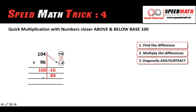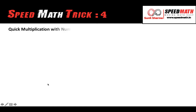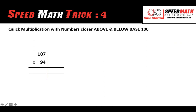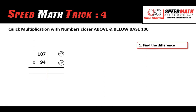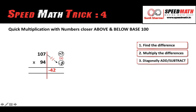Step 2 says subtract 1 from the left-hand side: 100 minus 1 gives you 99, and 84 as it is. So the answer is 9984. Let me take one more example. Writing the differences quickly: the first one is plus 7 and the second one is minus 6. Multiplying gives minus 42, and subtracting diagonally: 107 minus 6 gives us 101 on the left-hand side.